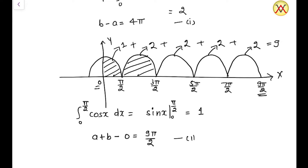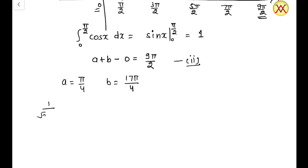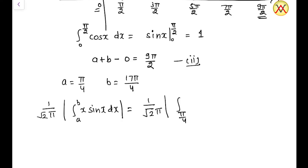We now have two equations in a and b. Solving them gives a = π/4 and b = 17π/4. We now find the value of (1/√(2π)) × |∫_{π/4}^{17π/4} x sin x dx|.